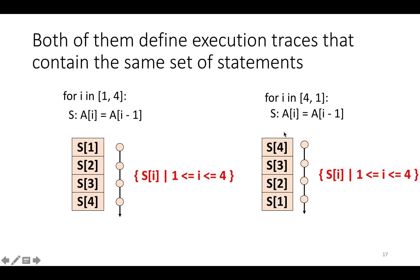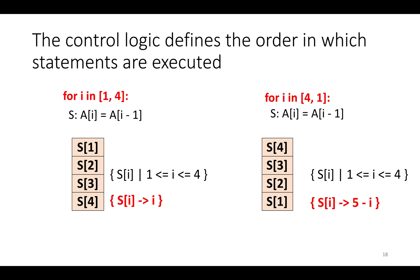The set of statements is exactly the same for these two programs — it's just that the for loops define different traces over them. The control logic defines the order in which these statements are executed. In the polyhedral model, we would call the order in which the statements are executed the schedule. We can represent the schedule as a map from statements to the times when they happen. Here highlighted in red, we have the schedule for the original program, which says that statement s_i happens at time i.